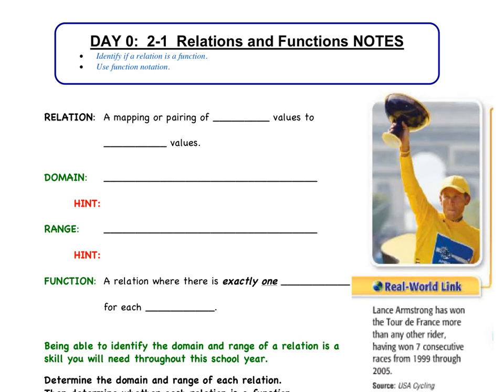So what exactly is a relation? A relation is a mapping or pairing of input values to output values. Typically, a relation is just a comparison of two variables, x and y. That's what we're used to seeing it as.